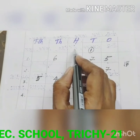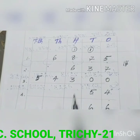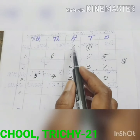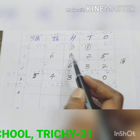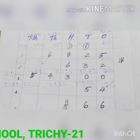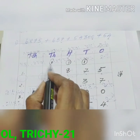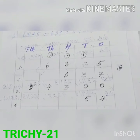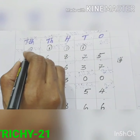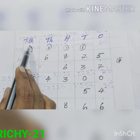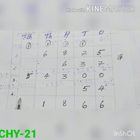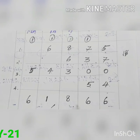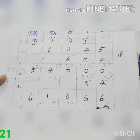Add the hundreds place: 6 plus 3 is 9, plus 1 is 10, plus 8 is 18. Write 8 in hundreds and carry over one. In thousands place: 6 plus 4 is 10, plus 1 is 11. Write 1 and carry over one. In the ten-thousands place: 5 plus 1 is 6. So the final answer is 61,866.